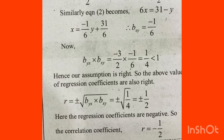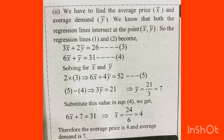The average price and average demand can be found. r is equal to plus or minus the square root of byx multiplied by bxy. We know that both regression lines intersect at x̄ and ȳ. So the regression lines become: 3x̄ plus 2ȳ equals 26, and 6x̄ plus ȳ equals 31. We have to solve these equations for x̄ and ȳ.